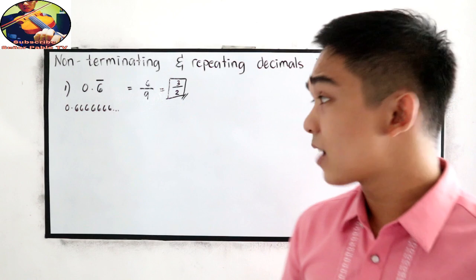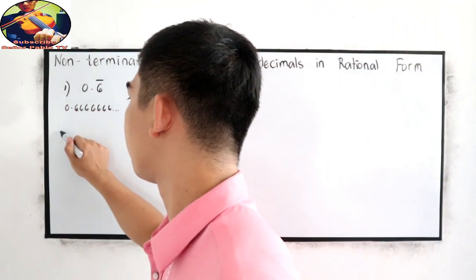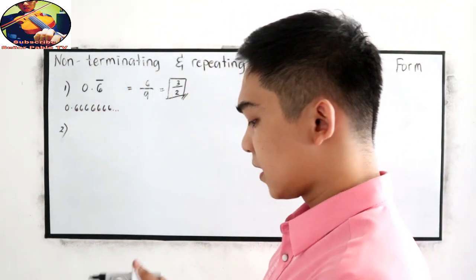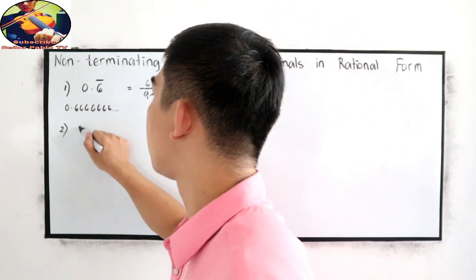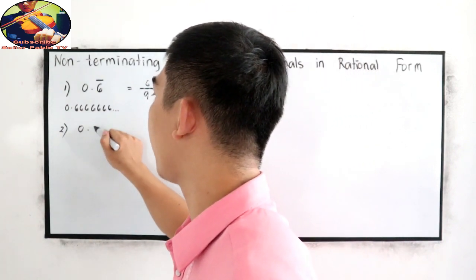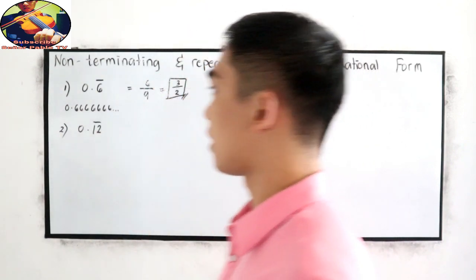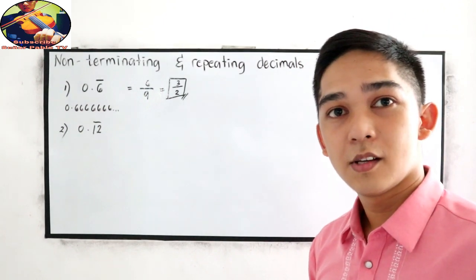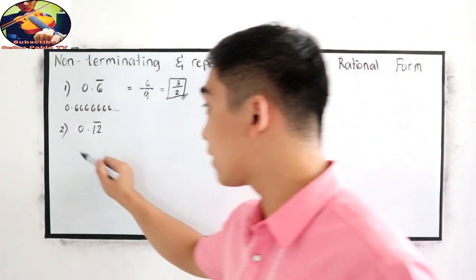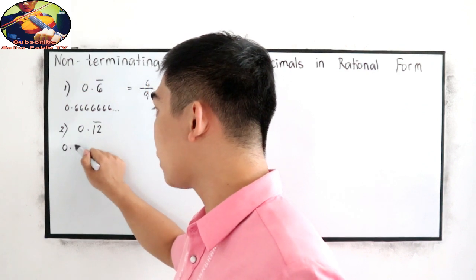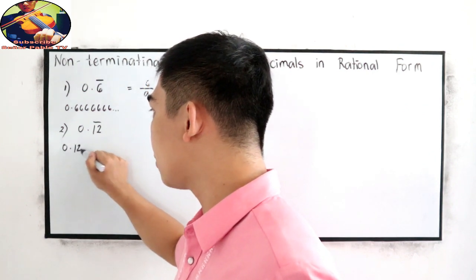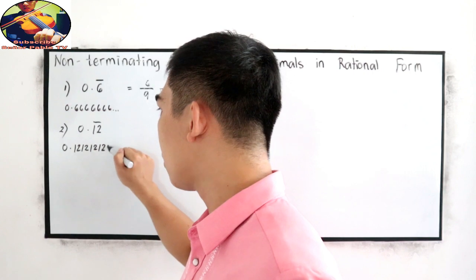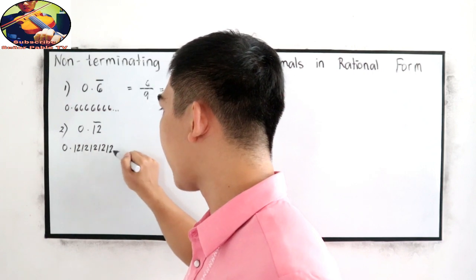Next, our second case. Let's say 0.12 bar. That is equivalent to 0.121212121212 and so on.